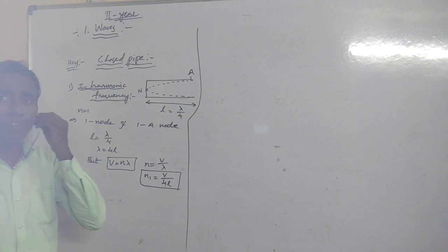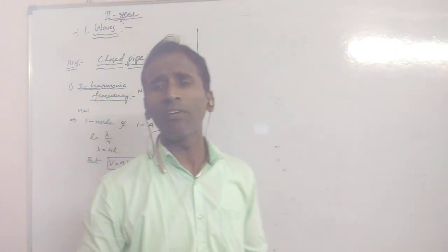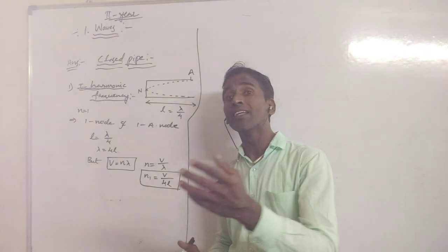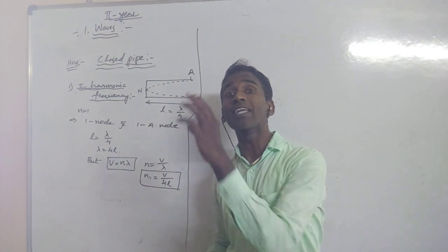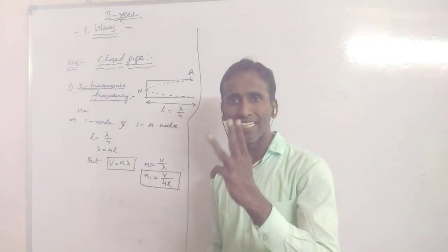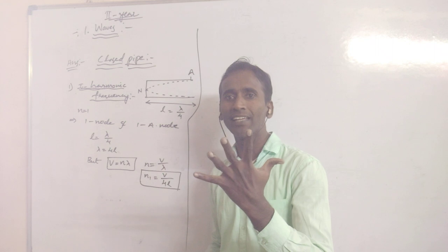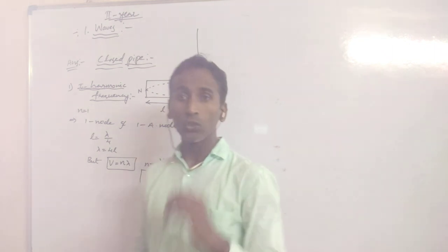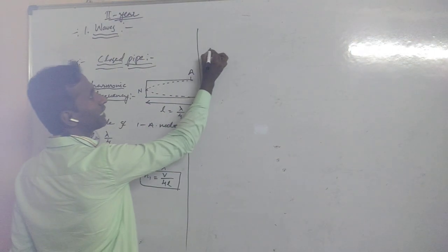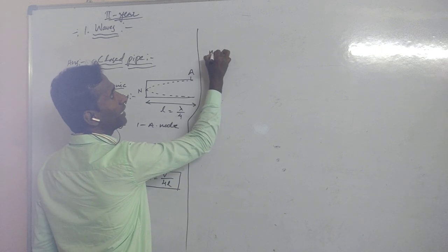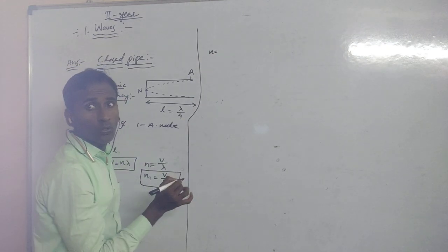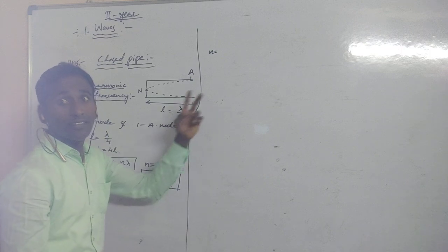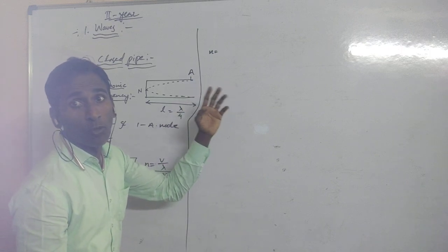In a closed pipe, there is no second harmonic frequency. The pipe only supports odd-numbered harmonics: 1, 3, 5, and so on. So the next frequency we consider is n equal to 3, which is the third harmonic frequency.